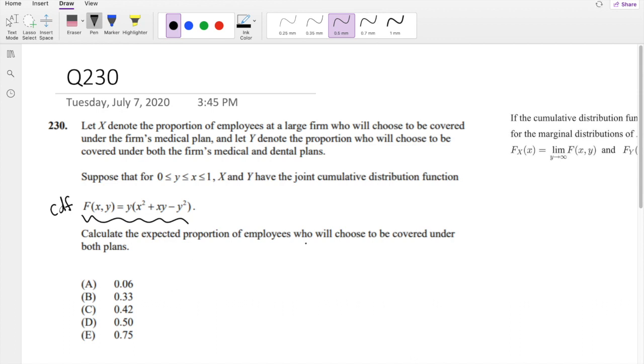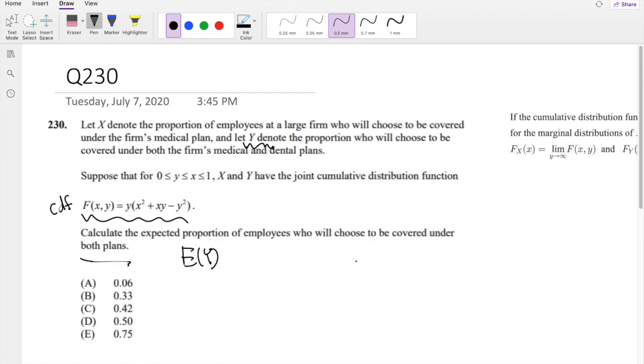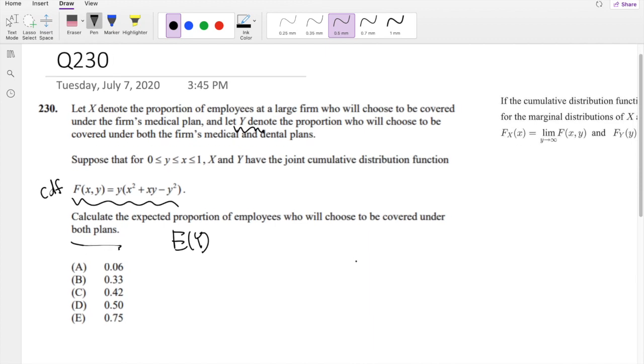So then, under both plans is our Y value, right? So they're basically asking, find the expected value of Y. In order to do that, we first need to find our marginal distribution.